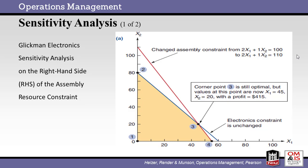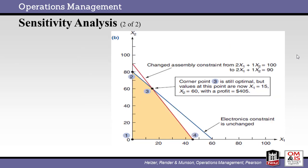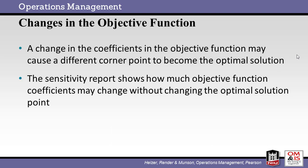This graph shows the sensitivity analysis for the given example. In this case, we have added resources to the assembly constraint. With this change, we are able to increase profits to $415, as shown at corner point 3. This is the value of a sensitivity analysis. We can try different what-if analyses and see the result. This next sensitivity analysis shows the profit impact of reducing resources in the assembly department. The new profit level is $405. Another possible change would be to the objective function itself. The sensitivity analysis can show the impact of changes to the coefficients of the equation. Sensitivity analysis can be used to review any number of changes to gain a clear understanding of the business process under review.